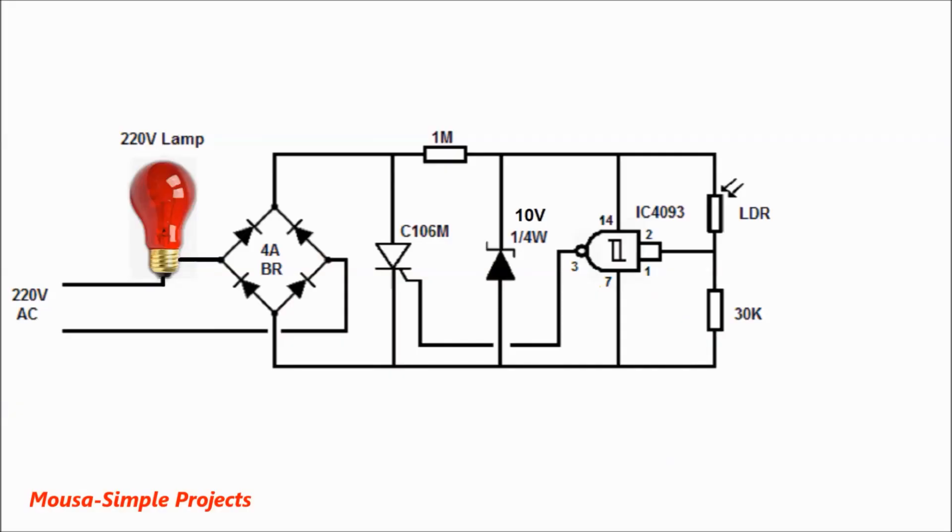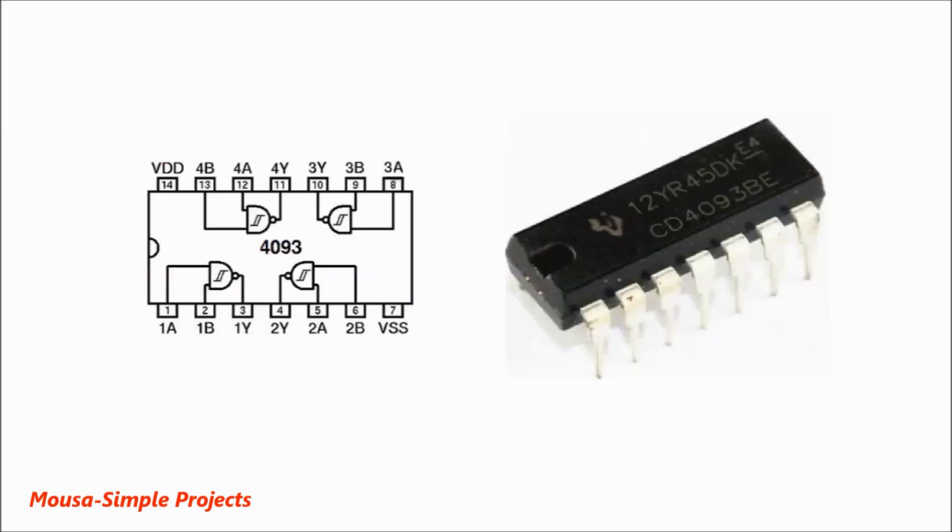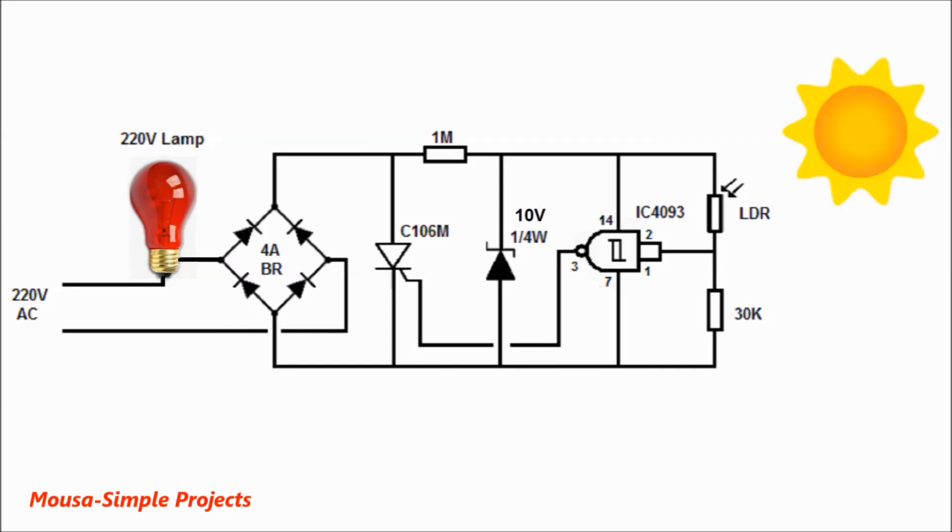I designed this circuit using IC4093, which has four NAND gates with Schmitt trigger. In the daytime, the resistance of the LDR is low, so the input voltage of the NAND gate is high and the output is low. The SCR is switched off and the lamp stays off.